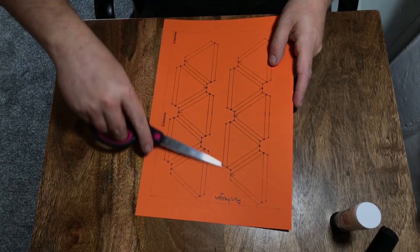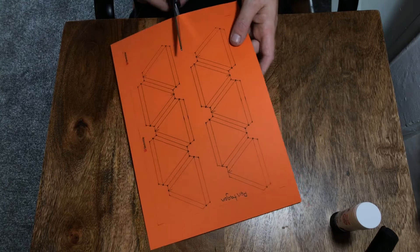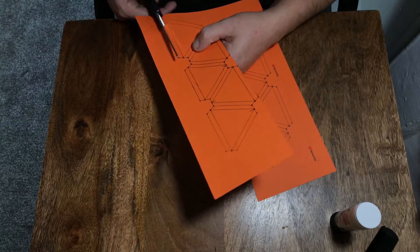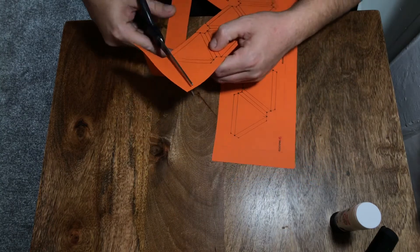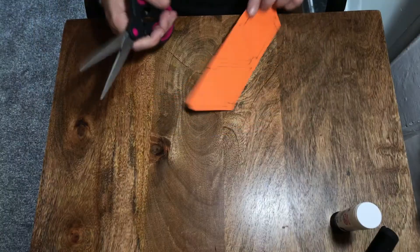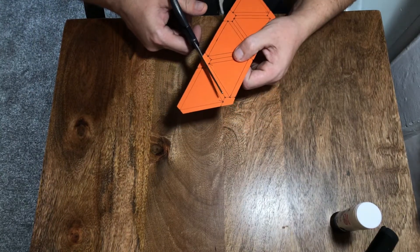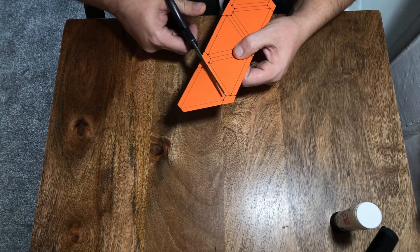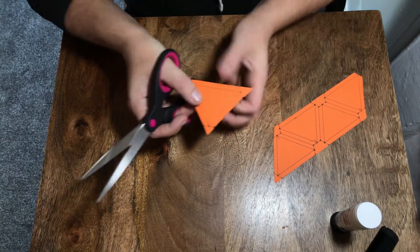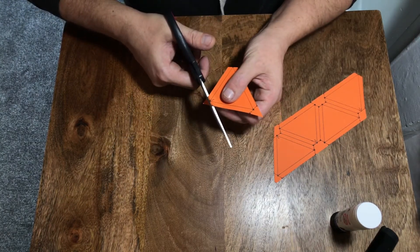To do this process, the first thing we want to do is just cut out along these outside lines. I'll just show you one for now. We're going to just cut that out.